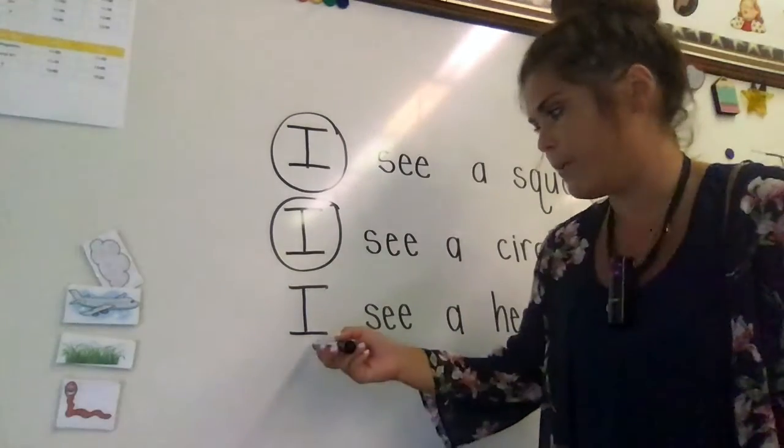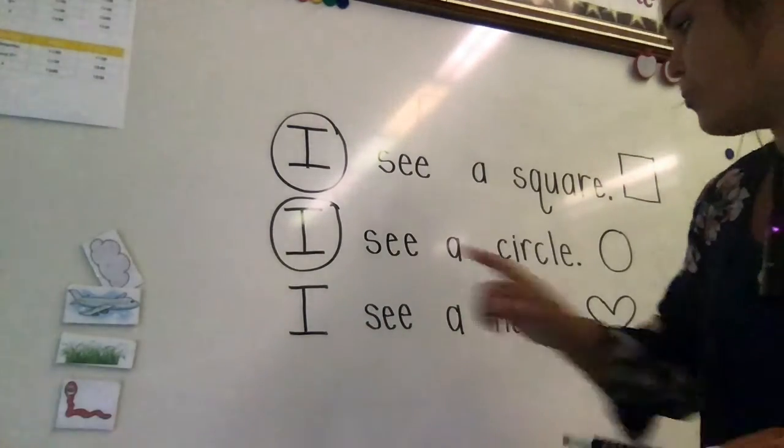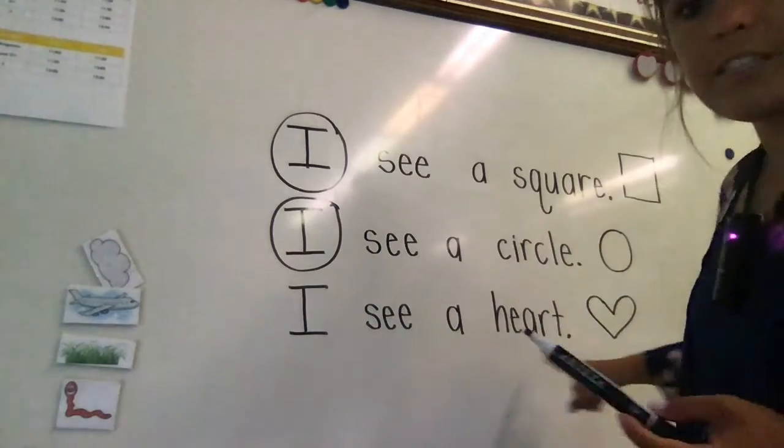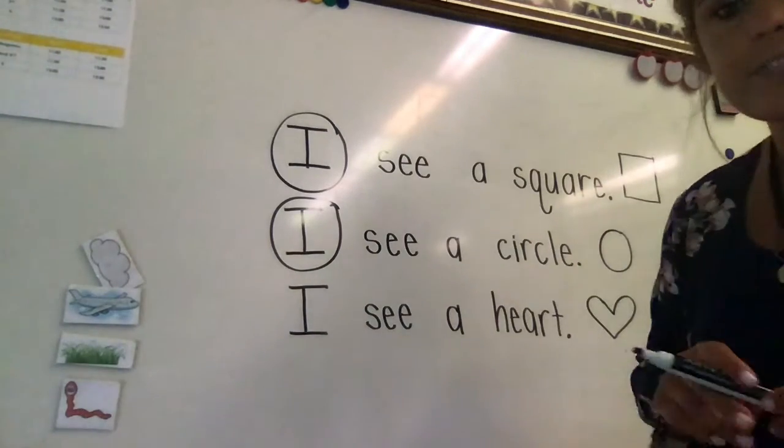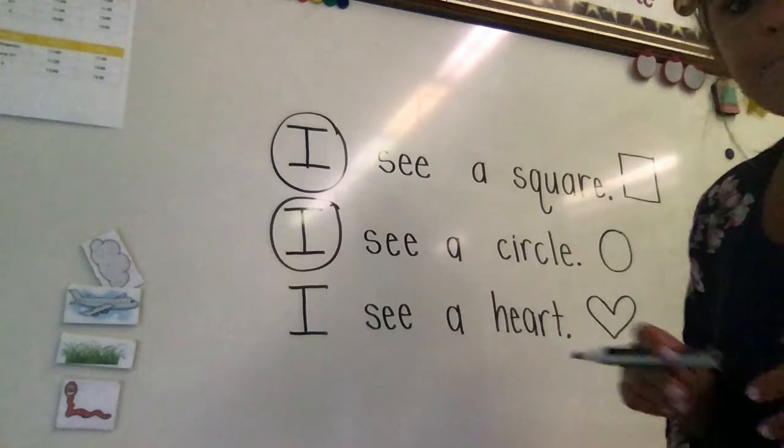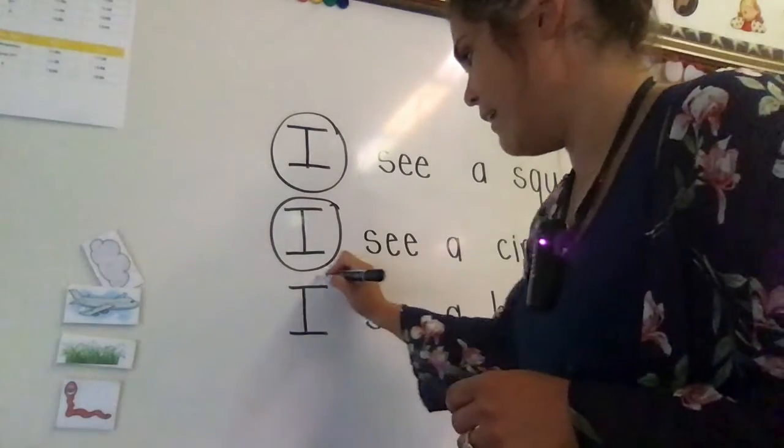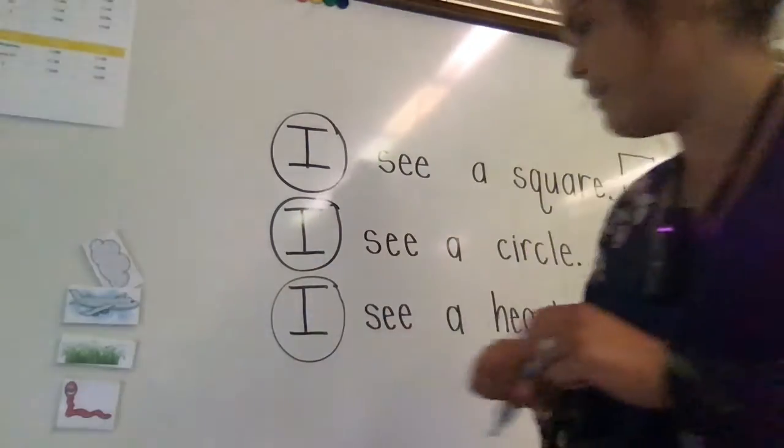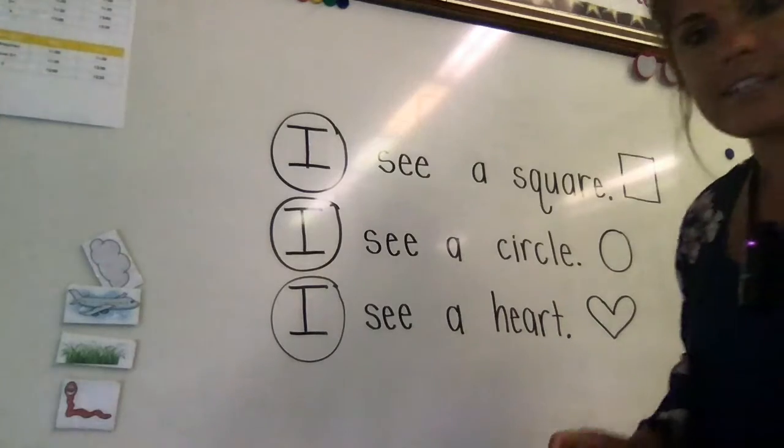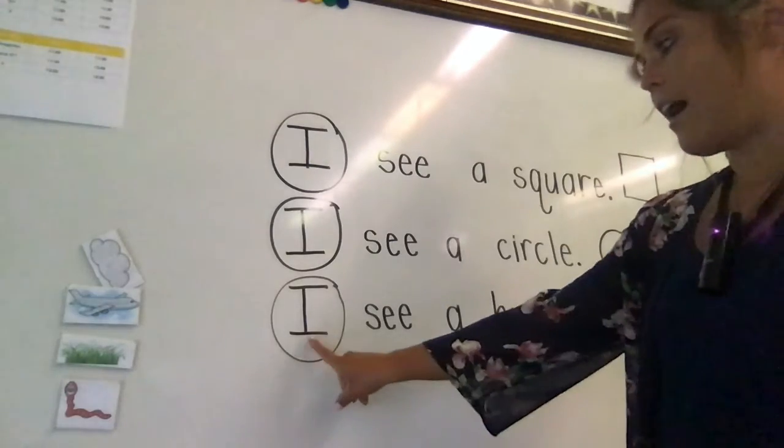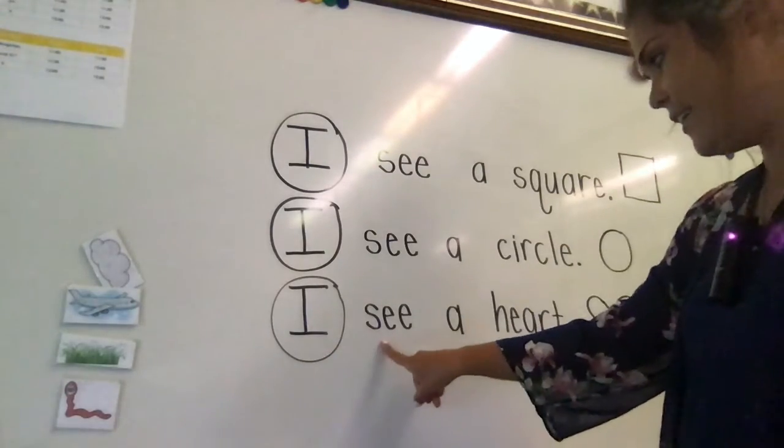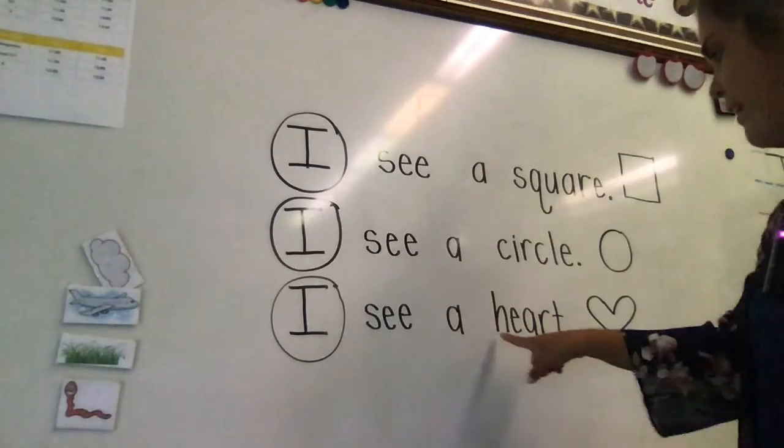Alright, we have one more to go. On this sentence, we're again going to point to where you see sight word I. Where do you see I? Wherever you see I, you're going to find and circle it and then we're going to read the sentence together. I see a heart.